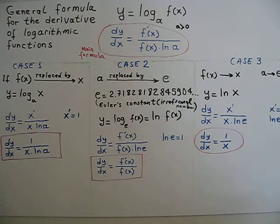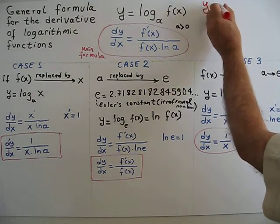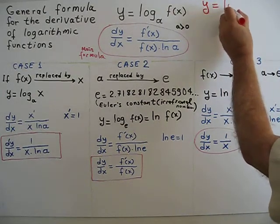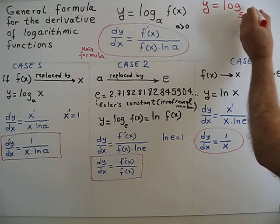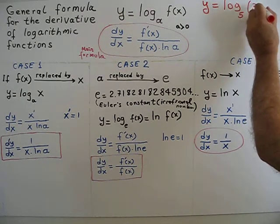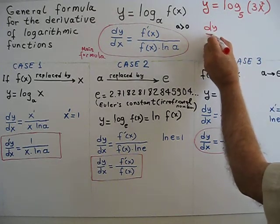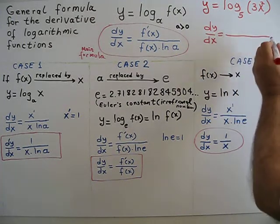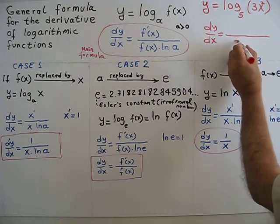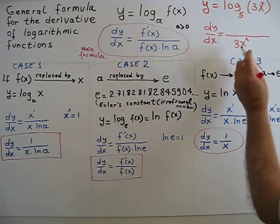An example of this main formula is y equal log base 5 of 3x square. dy over dx equal... 3x square goes to denominator.